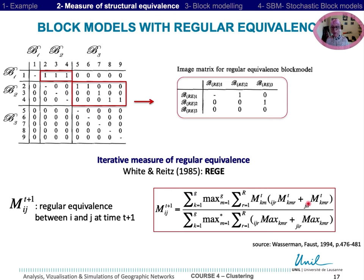The denominator corresponds to the maximum possible value of the numerator when ties of i and j match perfectly and all adjacent nodes are also regular equivalent.